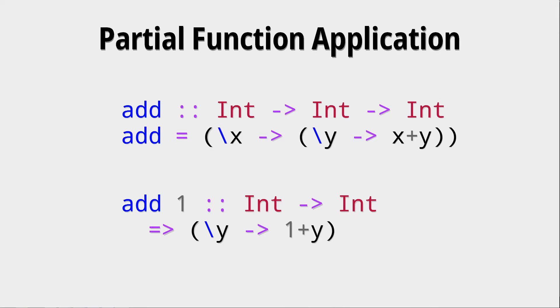So this is a way of changing the behavior of a function and generating new functions from old functions. This is called partial function application and it's done all the time in functional programming.